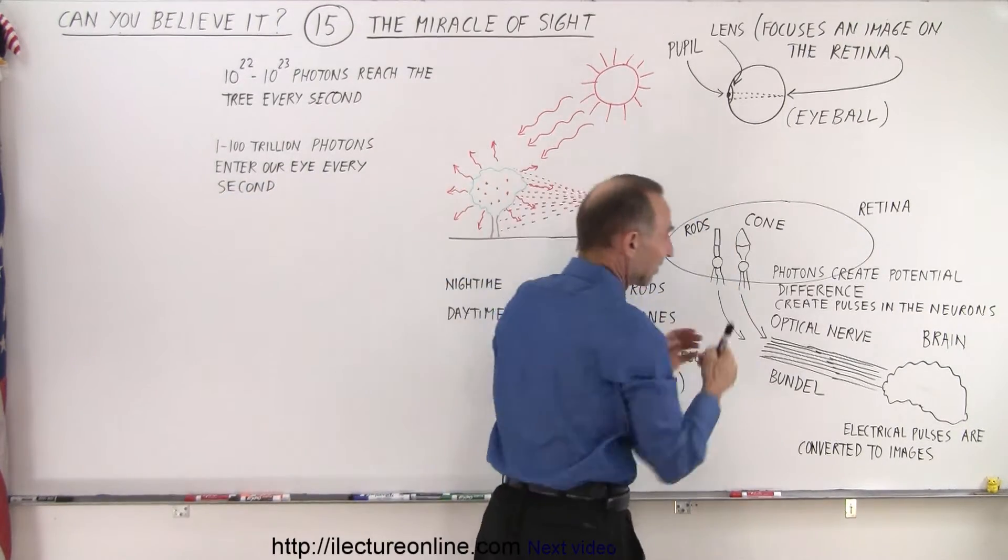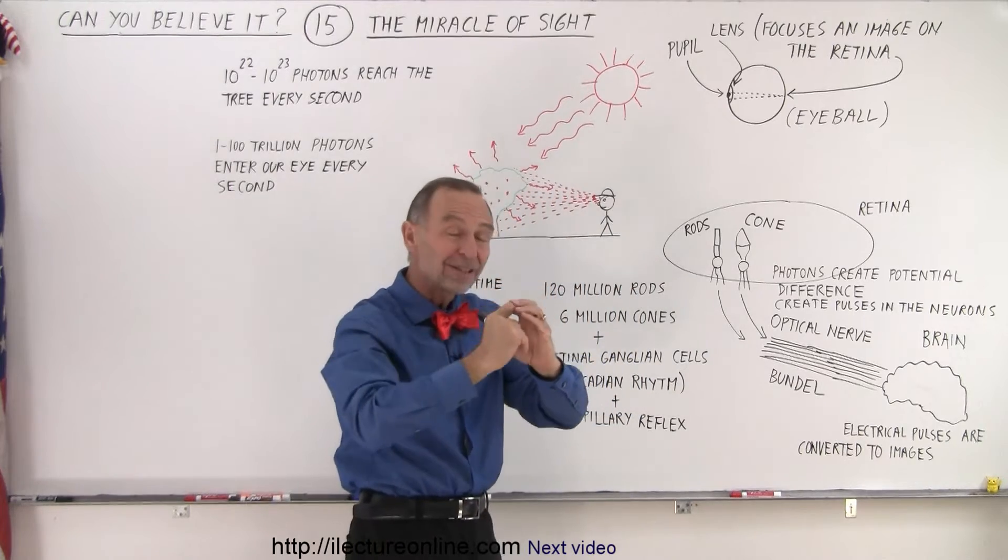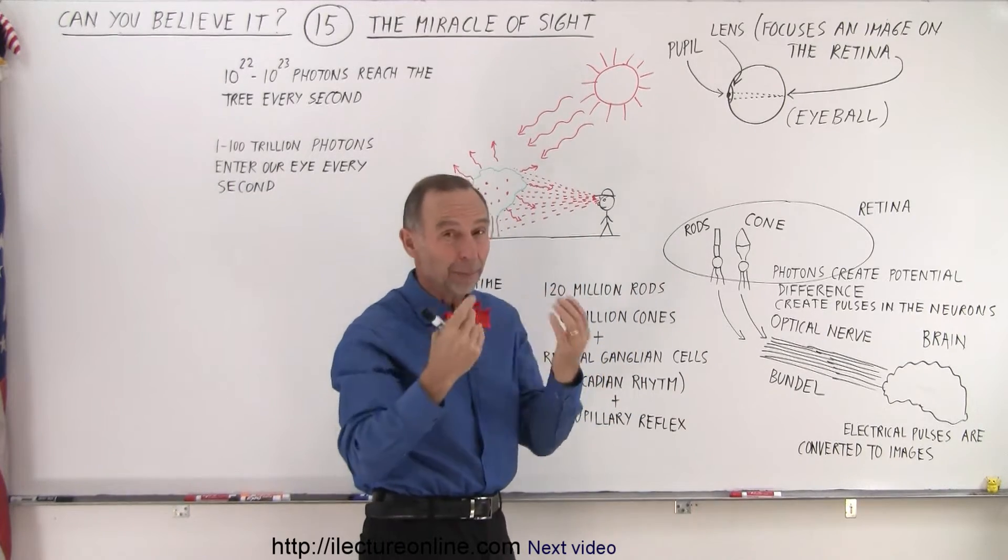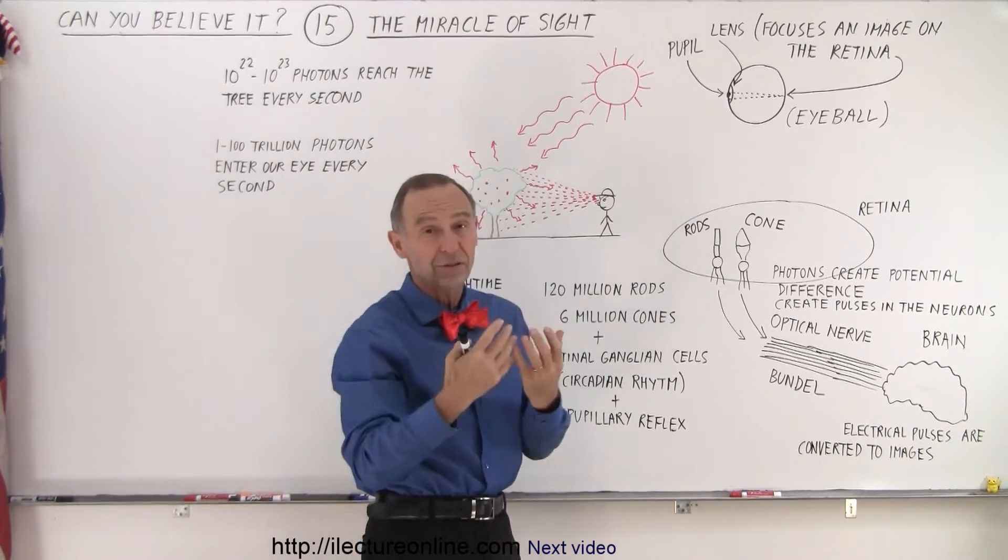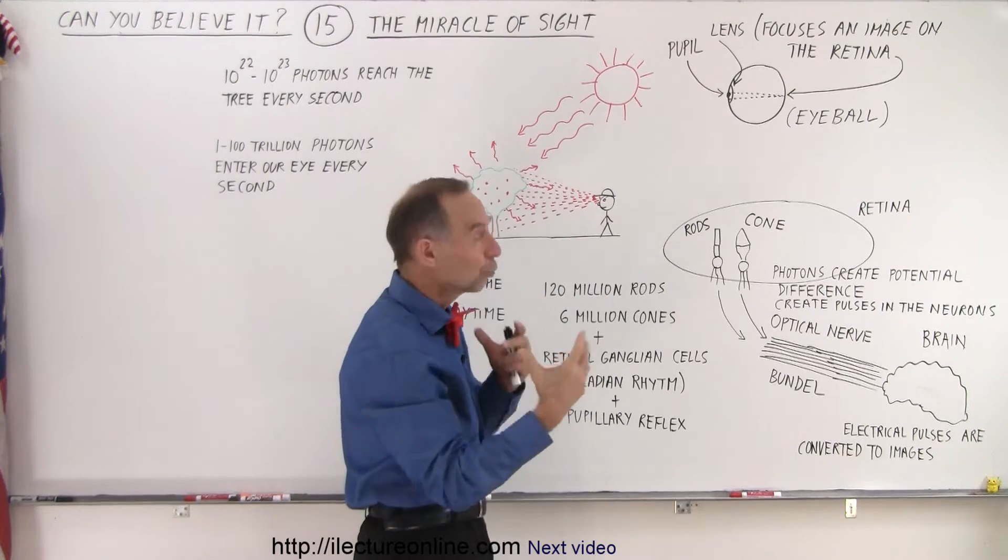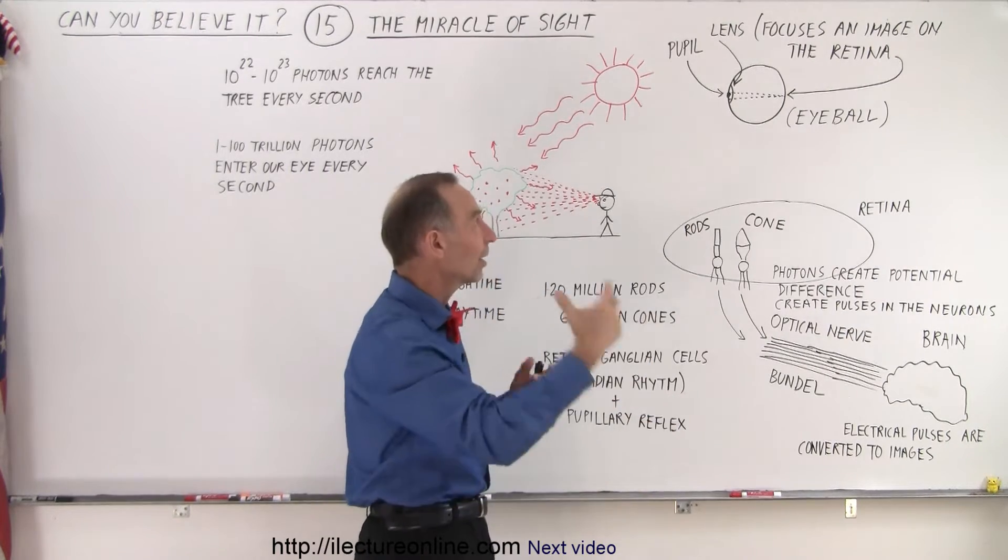Our eye has a pupil, that's kind of the window to our eye, which can be changed in size. If it's very bright outside, the pupil gets smaller. If it's very dim, the pupil gets bigger, to adjust for the amount of light that's allowed to enter the eye.